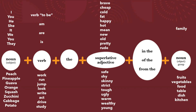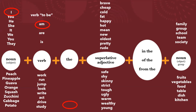The group can be family, group, school, team, society, etc. Let's take a look at some samples. For example: I am the oldest of the group.